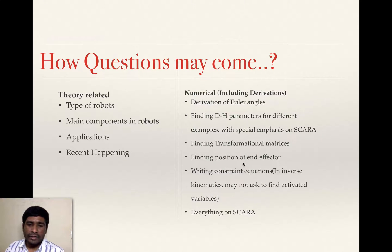And finding the position of end effector. This is nothing but end transformational matrix. The last column of the transformational matrix automatically gives the position of end effector here. That deals with the kinematics, direct kinematics here. Up to here, these are all very easy to solve in the exam.